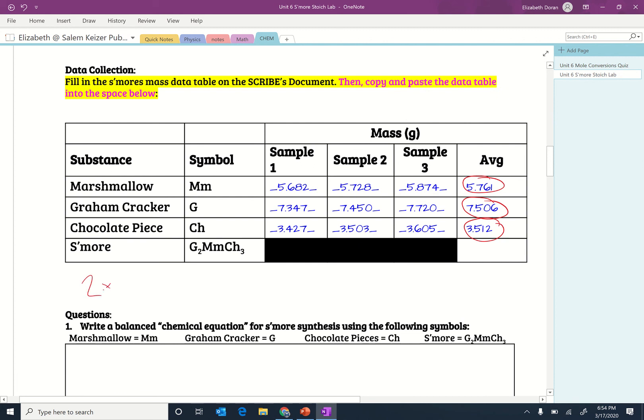So we'll take two times 7.506, and your numbers are not going to be exactly this, but they'll be somewhere close. I just made these numbers up actually. Plus you have one marshmallow, so we can do one times 5.761 plus three times 3.512. Okay, so that's the way you are going to calculate the mass of one s'more on average.